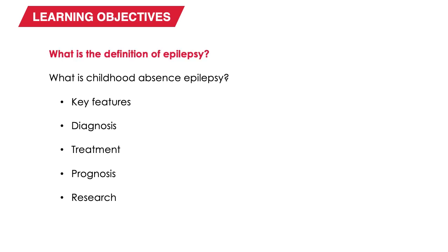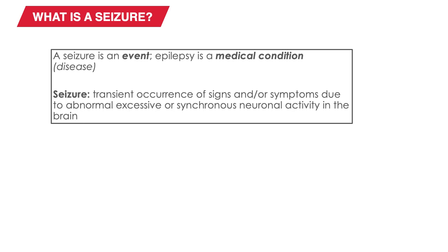So what is epilepsy? Epilepsy is a disease of seizures. A seizure is an event that happens to someone, whereas epilepsy is an enduring medical condition. A seizure has been defined as a transient occurrence of signs — that is, things that we can observe — or symptoms — that is, things that an individual can report they experienced. These outward signs or symptoms are due to the inward component of abnormal, excessive, or synchronous neuronal activity in the brain.